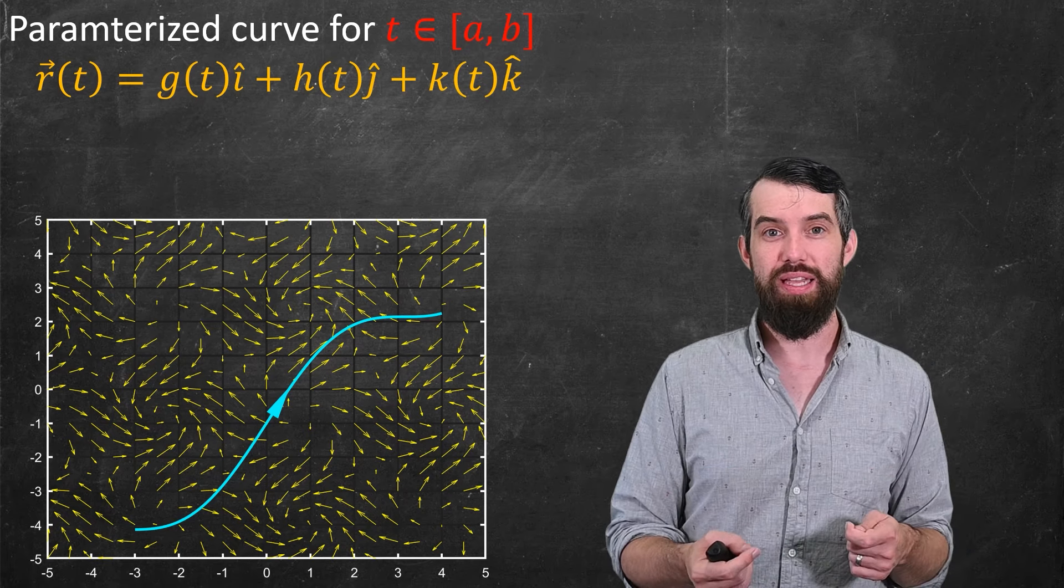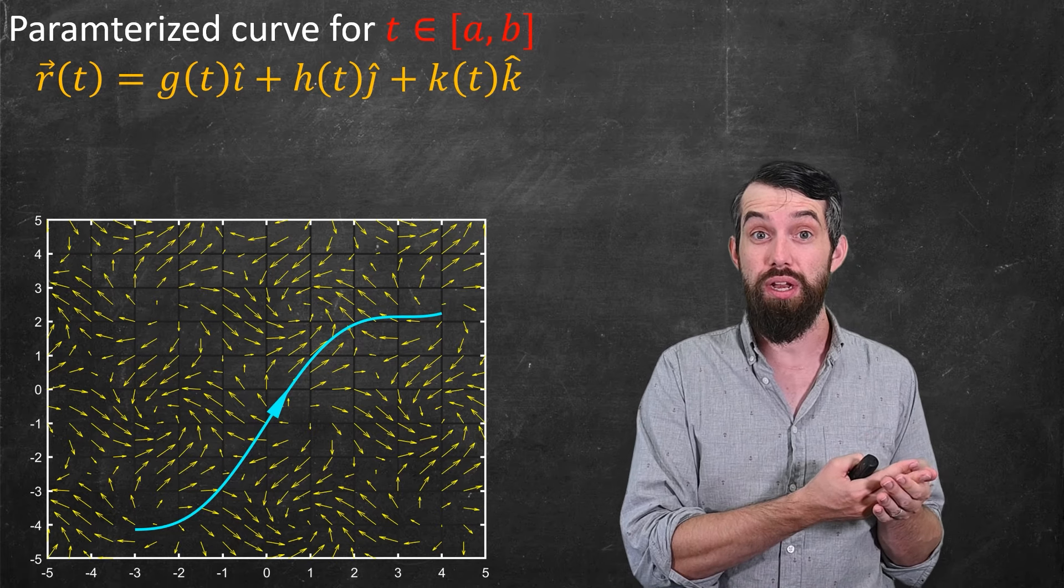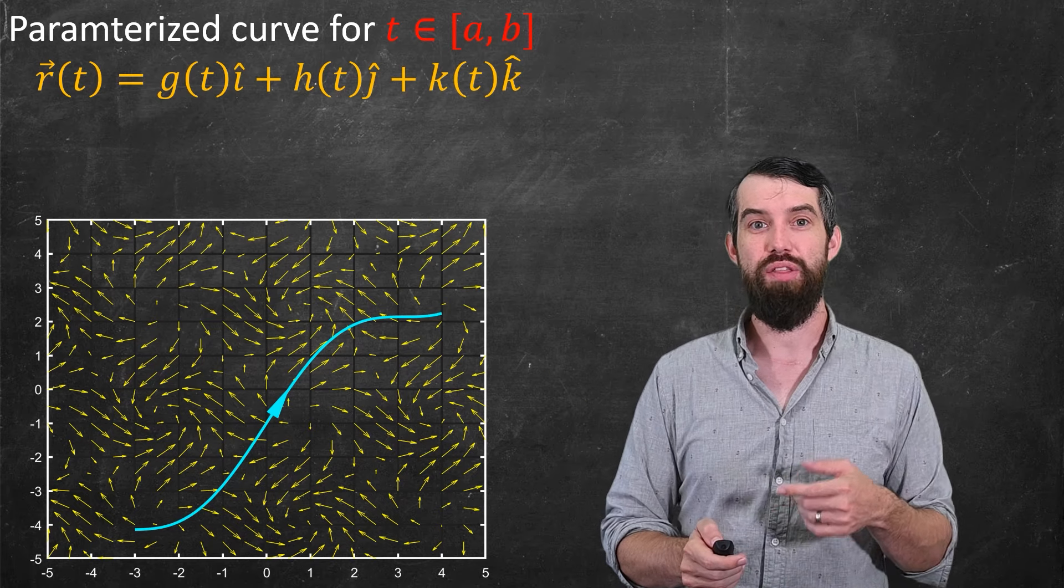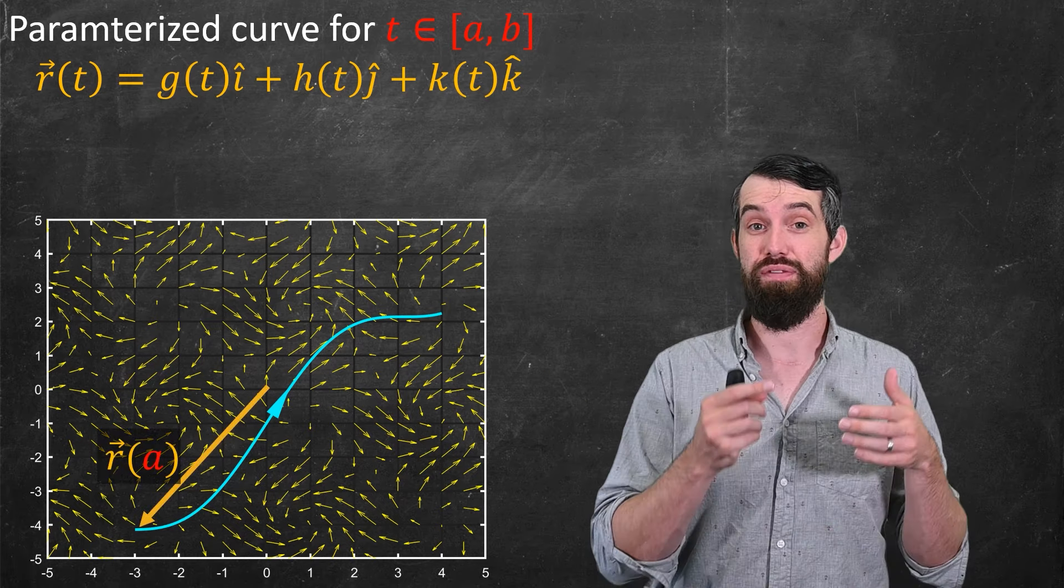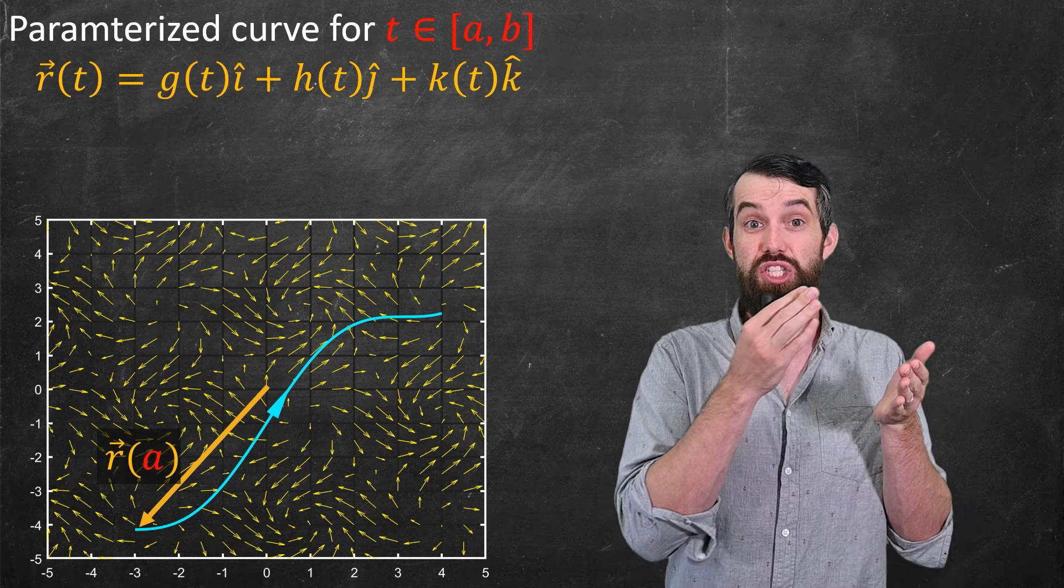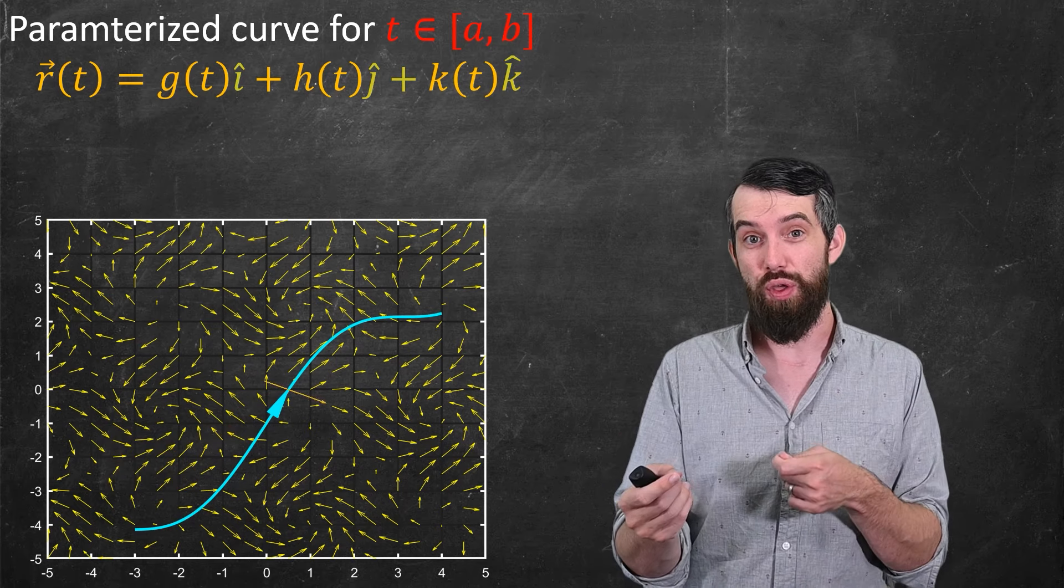The way I think about this is the vector r is a vector that goes from the origin out to the curve. So the origin is in the center of this plot, then the r of a, so that's sort of the first component on my interval of t from a up to b, points to the start of the curve, and then the r of b points to the end of the curve.